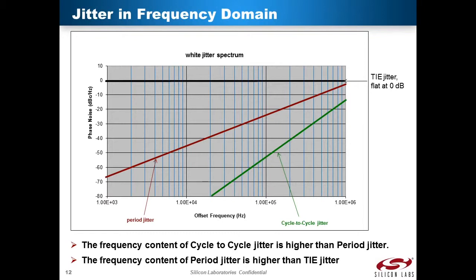It is intuitive that the frequency domain jitter content of cycle-to-cycle jitter is higher at higher frequencies, because the time frame affecting a given clock cycle extends no further out than the next clock period.